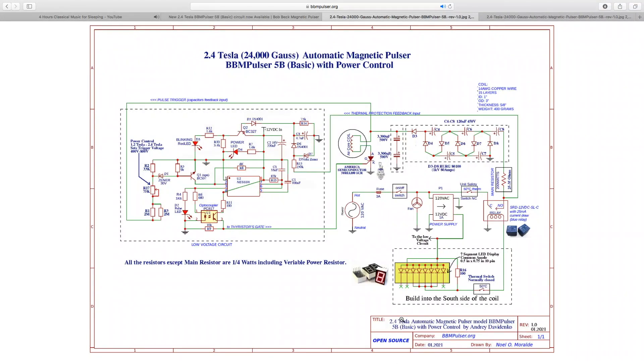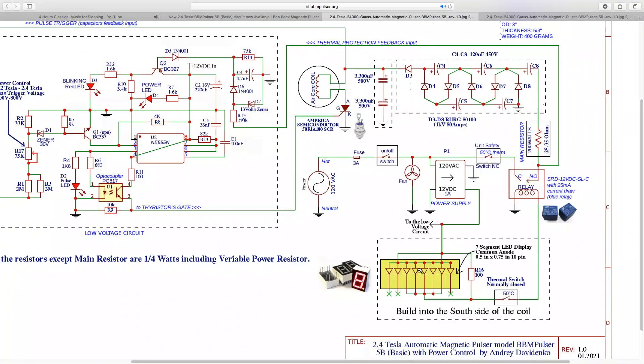Welcome, welcome! Finally I am releasing the 2.4 Tesla automatic magnetic pulser model 5b with the power control for everybody. It's open source and here you go, enjoy it. In this video I'll go over how this circuit works and different modules in this circuit, and we'll talk about each one independently.